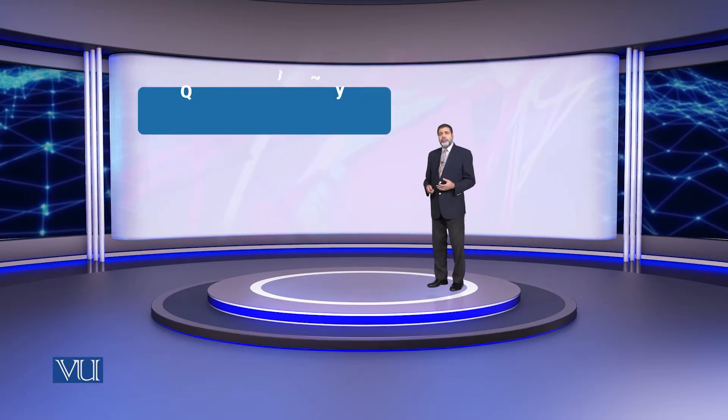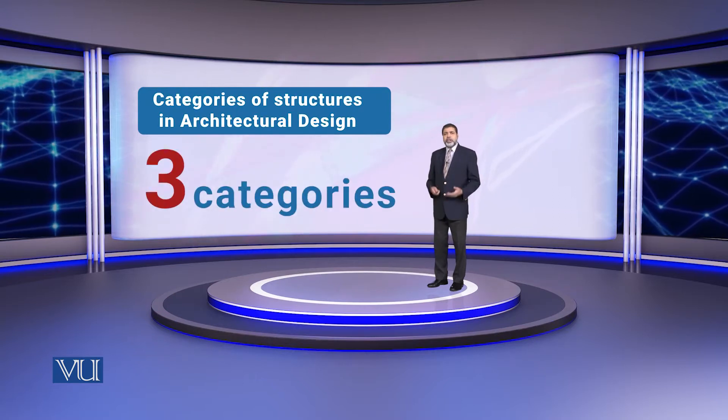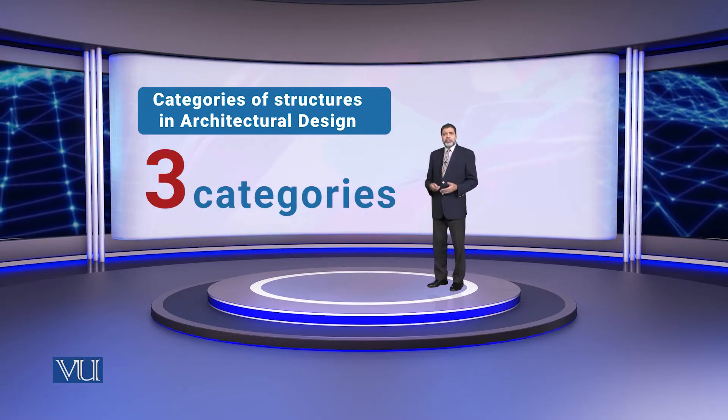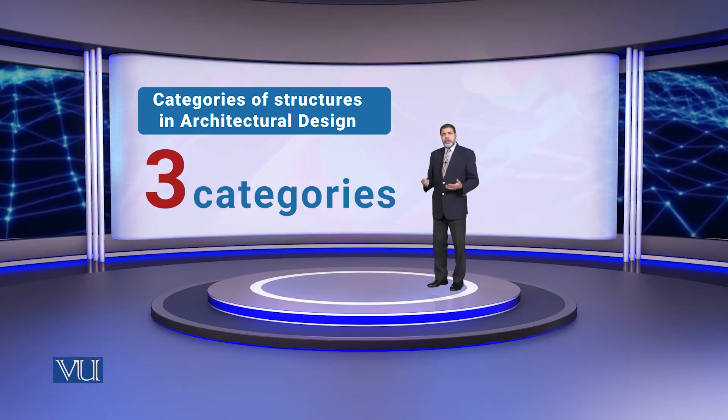There are fundamentally three different categories of structures that comprise software architecture. Broadly speaking, we can divide these structures into three categories. What are these three categories?